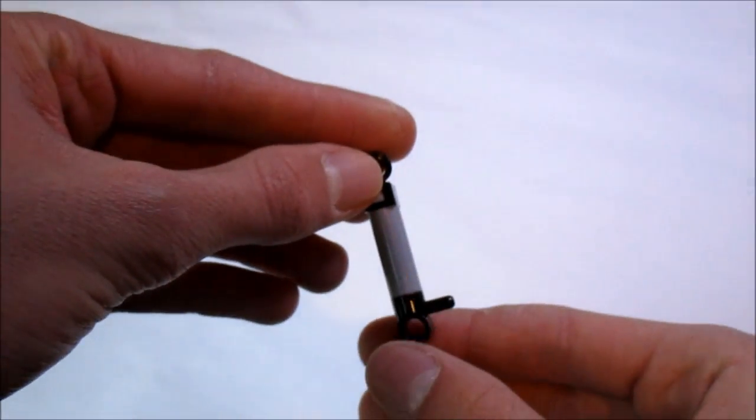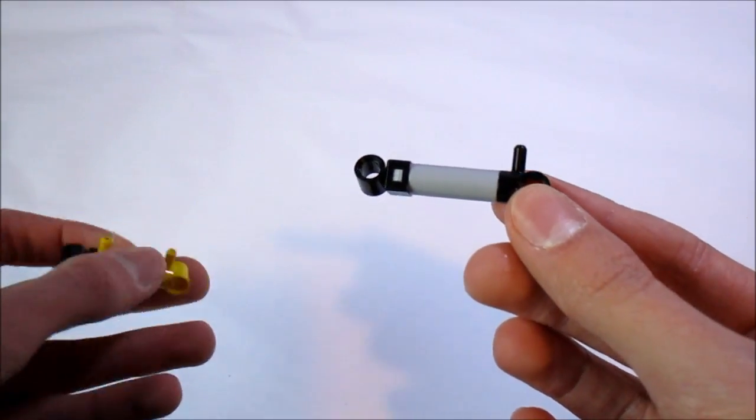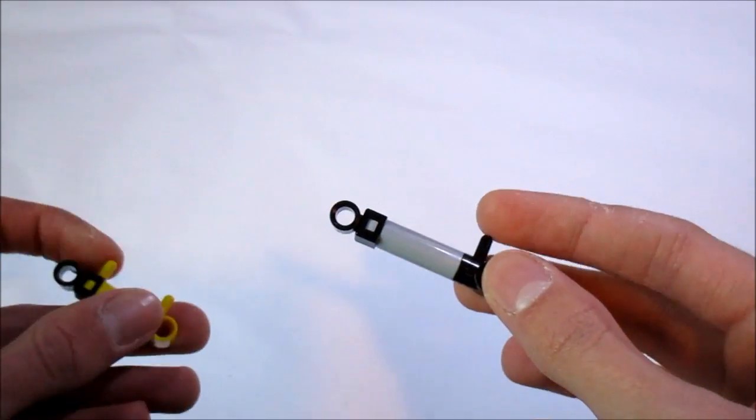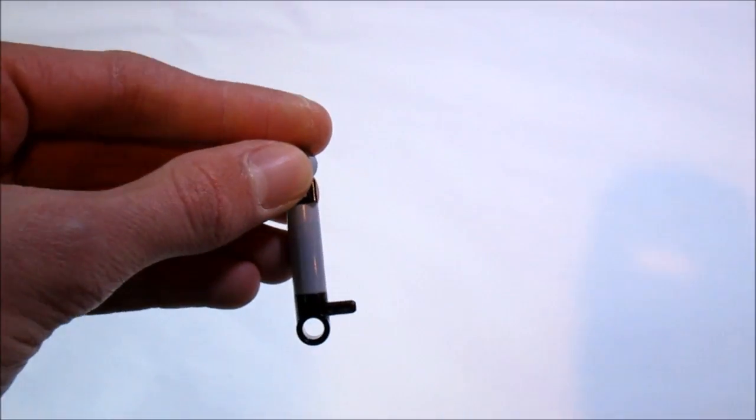You'll notice that the compressor looks similar to the piston, with one key difference: it only has one port, whereas the piston has two. And this only port is an output port.